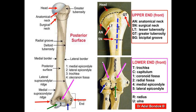Regarding the shaft: three borders — anterior, medial, and lateral. The lower part of the medial border is the medial supracondylar ridge; the lower part of the lateral border is the lateral supracondylar ridge. Three surfaces: anteromedial, anterolateral, and posterior. The posterior surface has a spiral groove, also called the radial groove, because it lodges the radial nerve and the profunda brachial artery. There is also an impression called the deltoid tuberosity, for the insertion of the deltoid muscle.